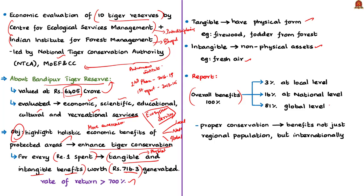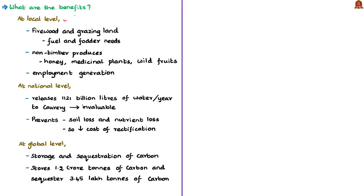At the local level, Bandipur Tiger Reserve provides firewood and grazing land for local people to meet fuel and fodder needs. Non-timber products like honey, medicinal plants, wild fruits and tubers are the main source of livelihood for local tribes living inside the forest, and employment generation in and around the reserve helps the local economy. At the national level, the reserve releases almost 1,121 billion litres of water into the Kaveri River, used by people in Karnataka and lower riparian states like Tamil Nadu and Pondicherry. The forest also prevents soil and nutrient loss from erosion, significantly reducing associated costs.